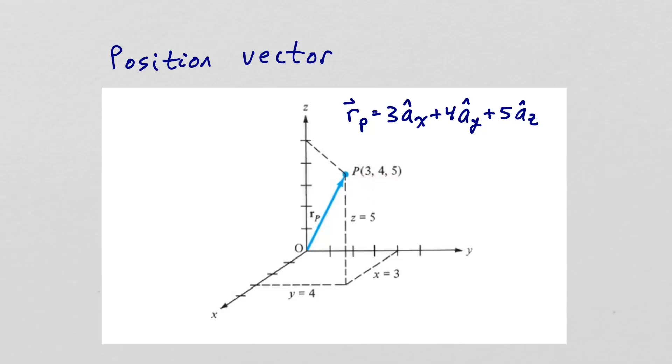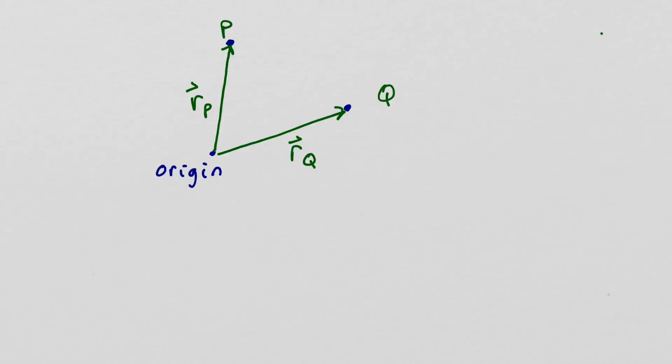Here we have two points, point P and point Q. And the position vectors, R sub P for point P and R sub Q for point Q. If we want to find the distance vector, that is the vector whose magnitude is the distance between P and Q and whose direction is the direction from P to Q, we see that it's just RQ minus R sub P.